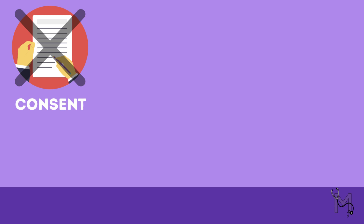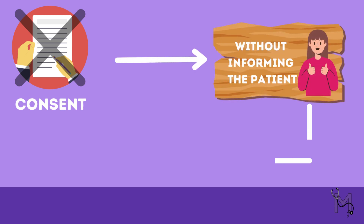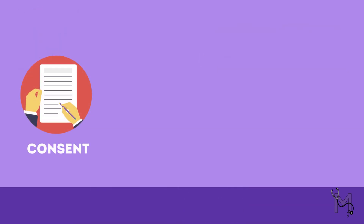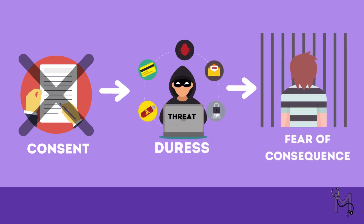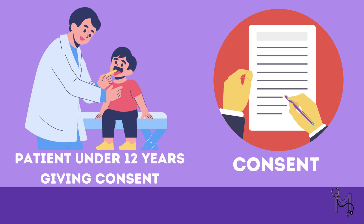There are a number of circumstances where consent is invalid. Consent is deemed invalid if it's given without fully informing the patient about the procedure and any potential dangers. It is also invalid if given under duress, out of fear of consequences, or due to a misrepresentation of the circumstances. Additionally, consent given by a patient under the age of 12 is regarded as invalid.